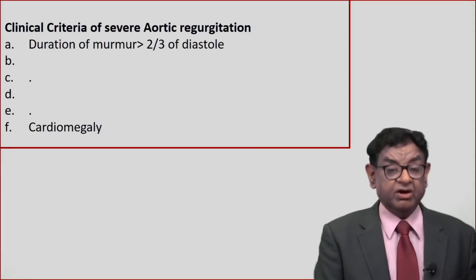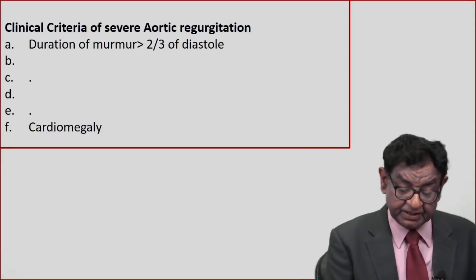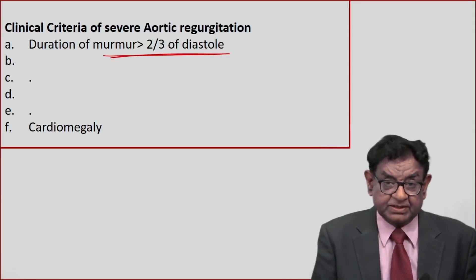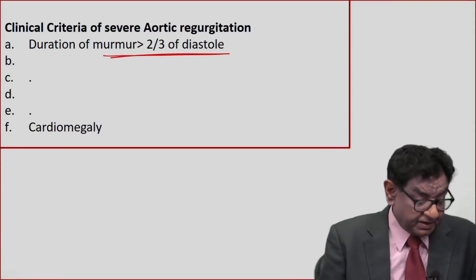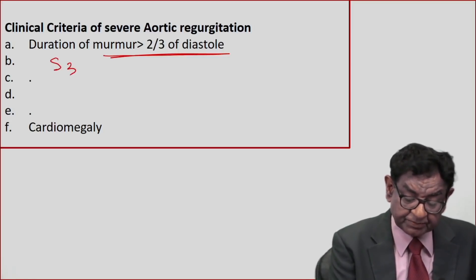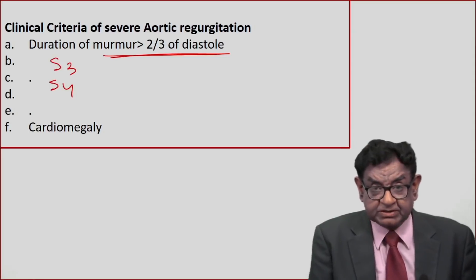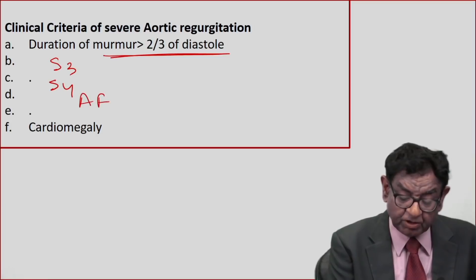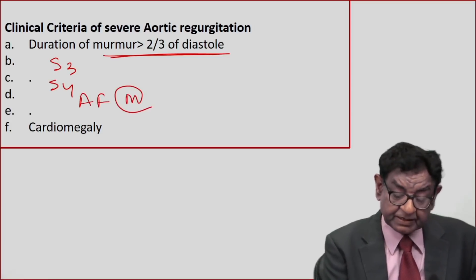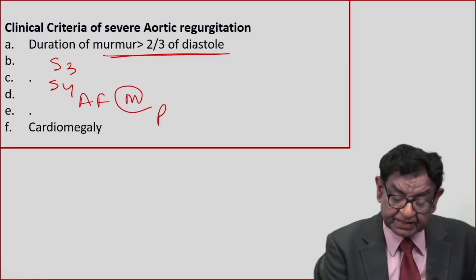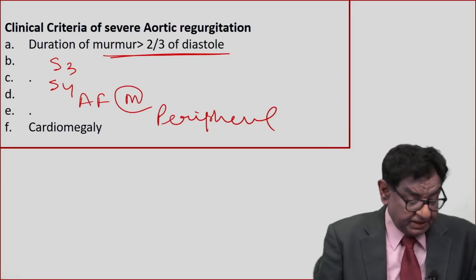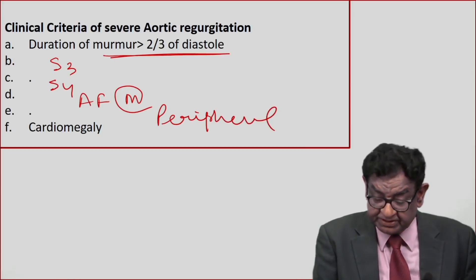What are the criteria of severe AR? Duration of murmur is two-thirds of diastole — a longer murmur indicates more severe AR. Third sound or fourth sound present are markers of severity. Austin Flint murmur is present. Presence of peripheral signs of AR also indicates severe disease.